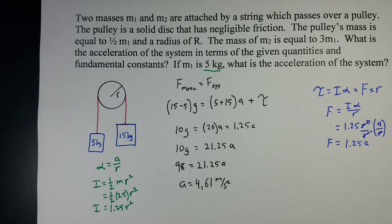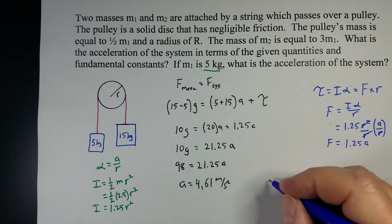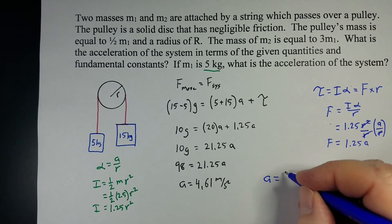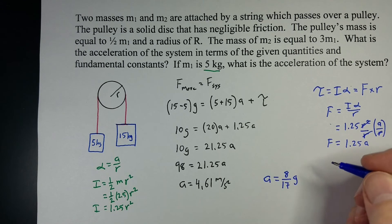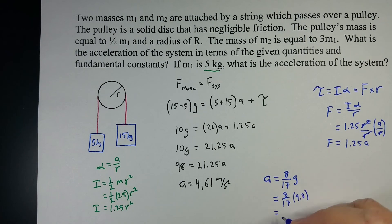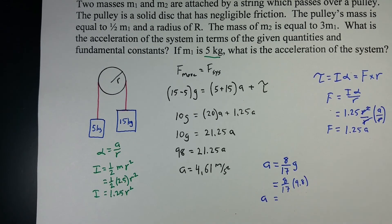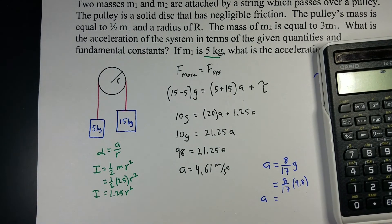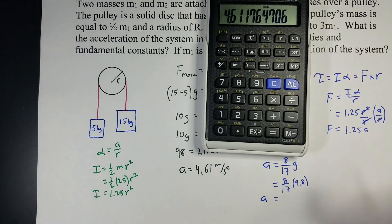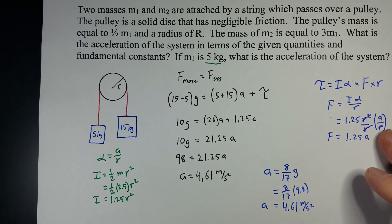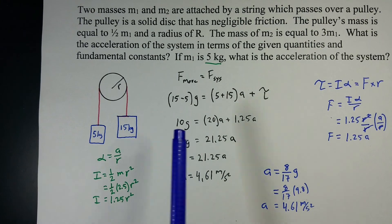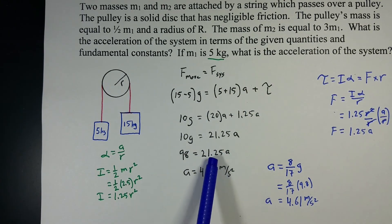Now on the previous page, we found out that A was equal to 8 over 17 G. Let's actually figure out what that is. If we go 8 over 17 times 9.8, we get 4.61 meters per second squared, which is the exact same answer. So everything worked out just fine. When we have all the masses in terms of M1, we can solve it algebraically. But if we don't, we can still do the same process, plug in the numbers, and get the exact same answer.